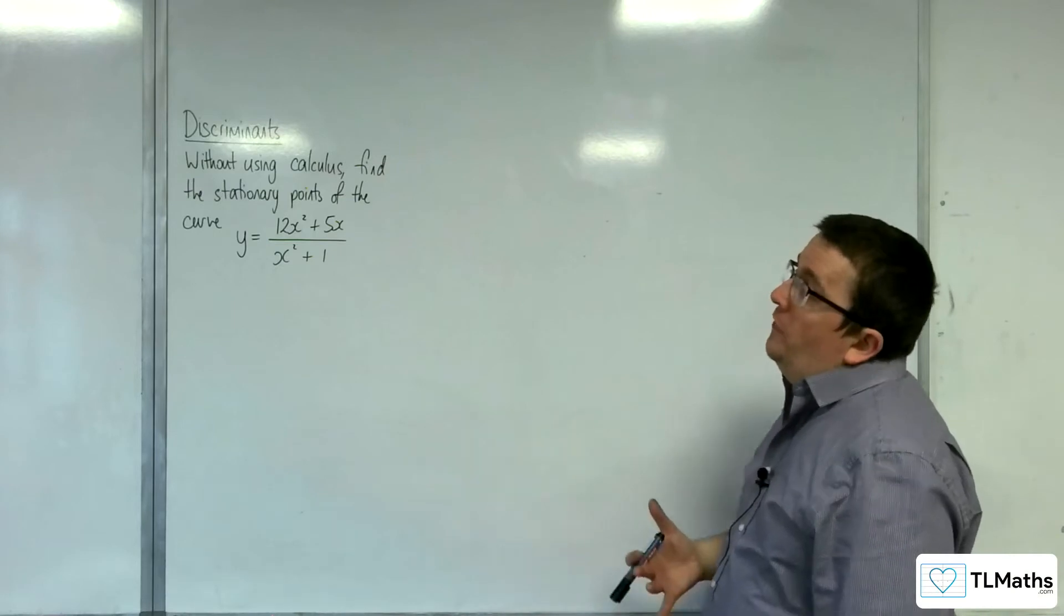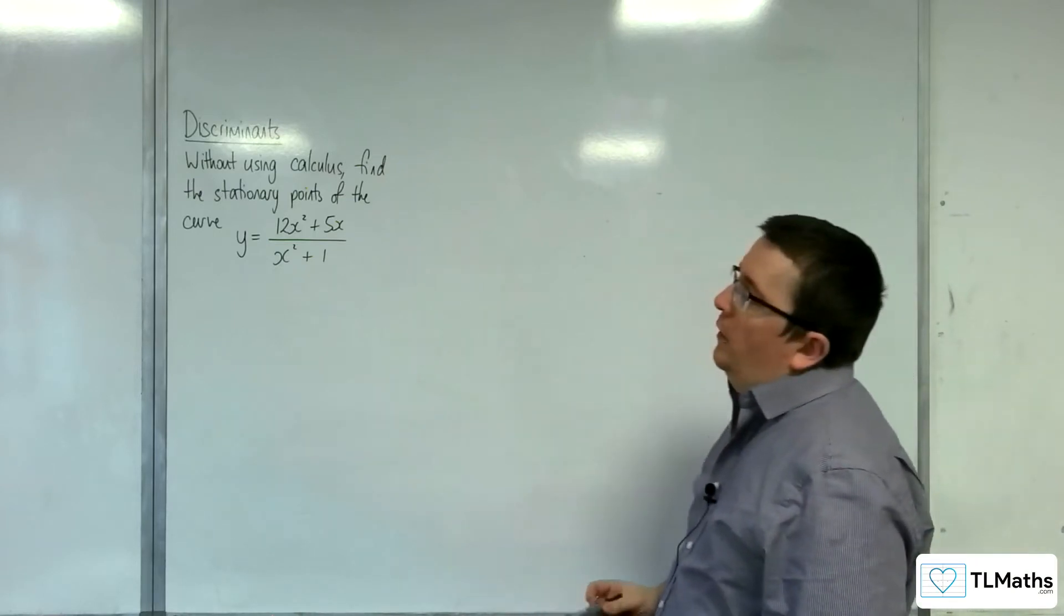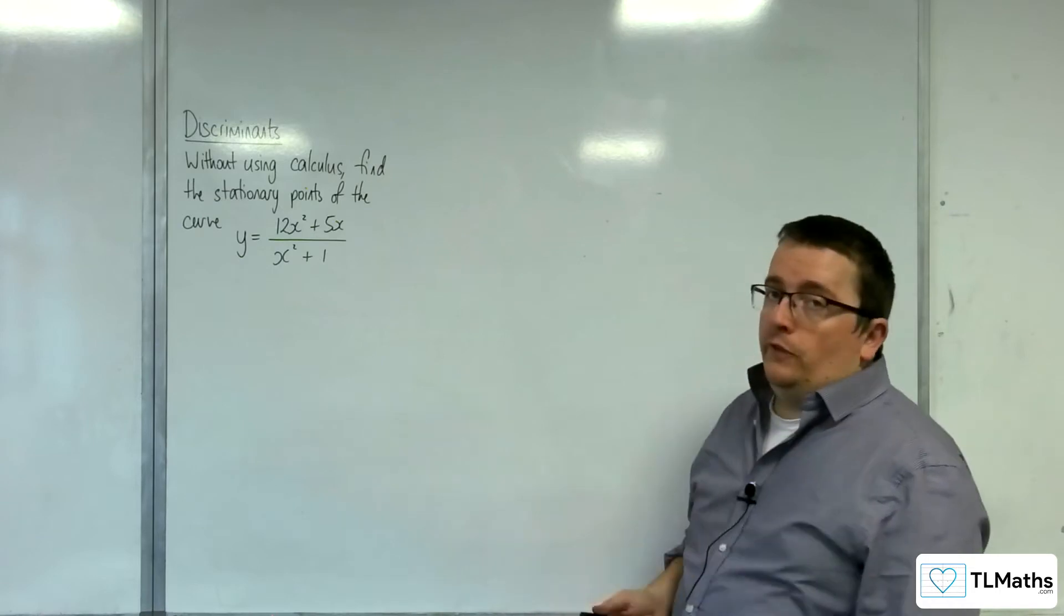In this video, we're going to try and find the stationary points of the curve y equals 12x squared plus 5x over x squared plus 1 without using calculus.